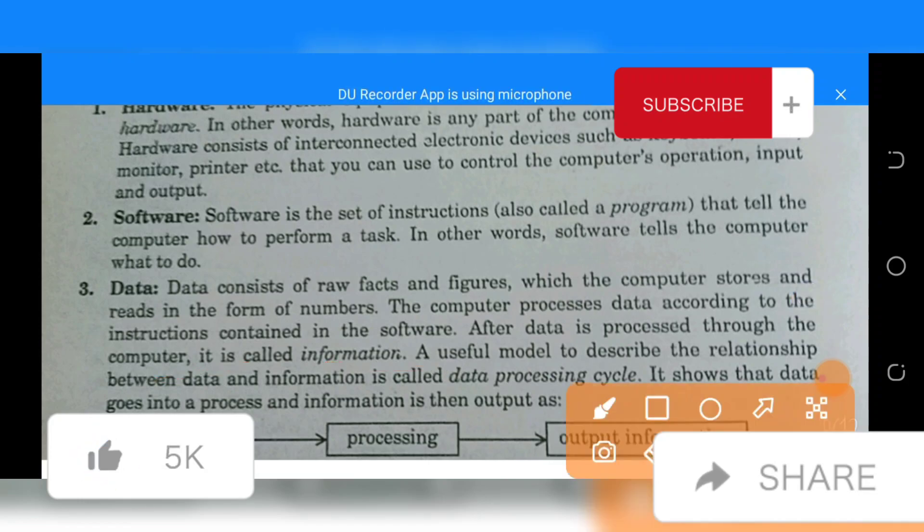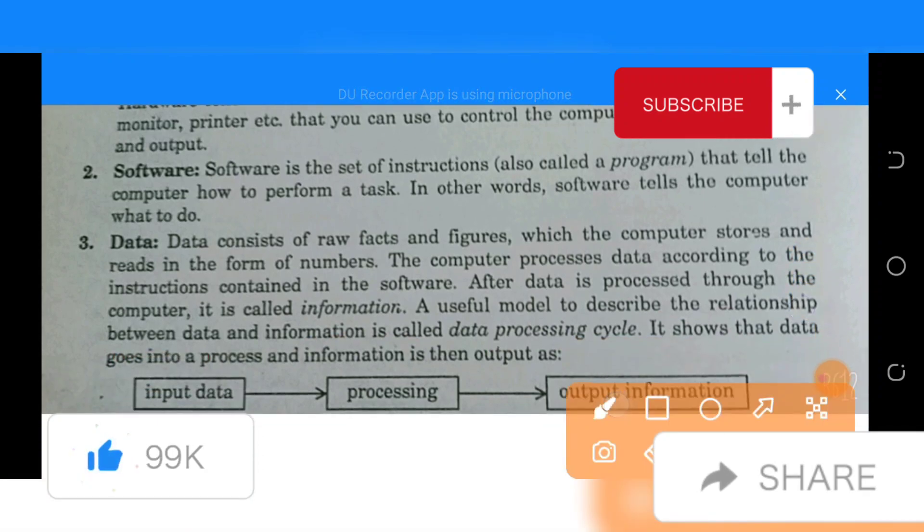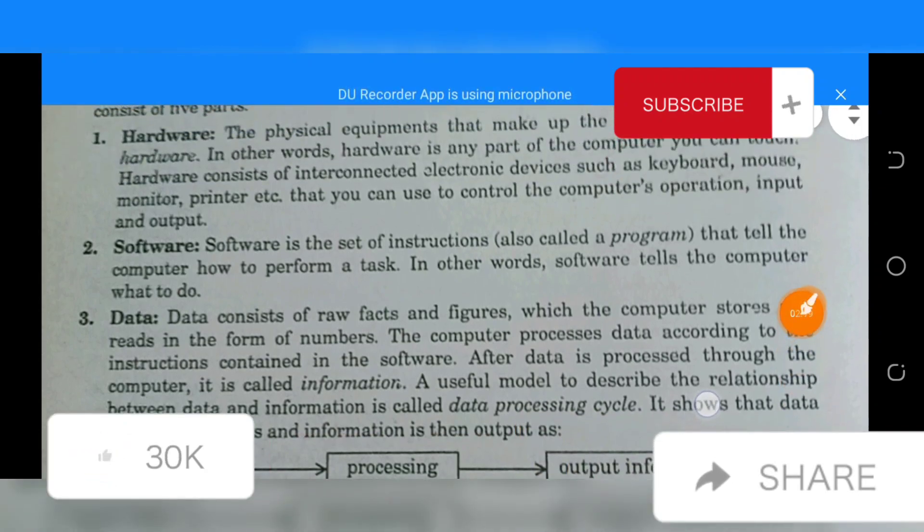Data consists of raw facts and figures which the computer stores and reads in the form of numbers. The computer processes data according to the instructions contained in the software. A useful model to describe the relationship between data and information is called the data processing cycle.